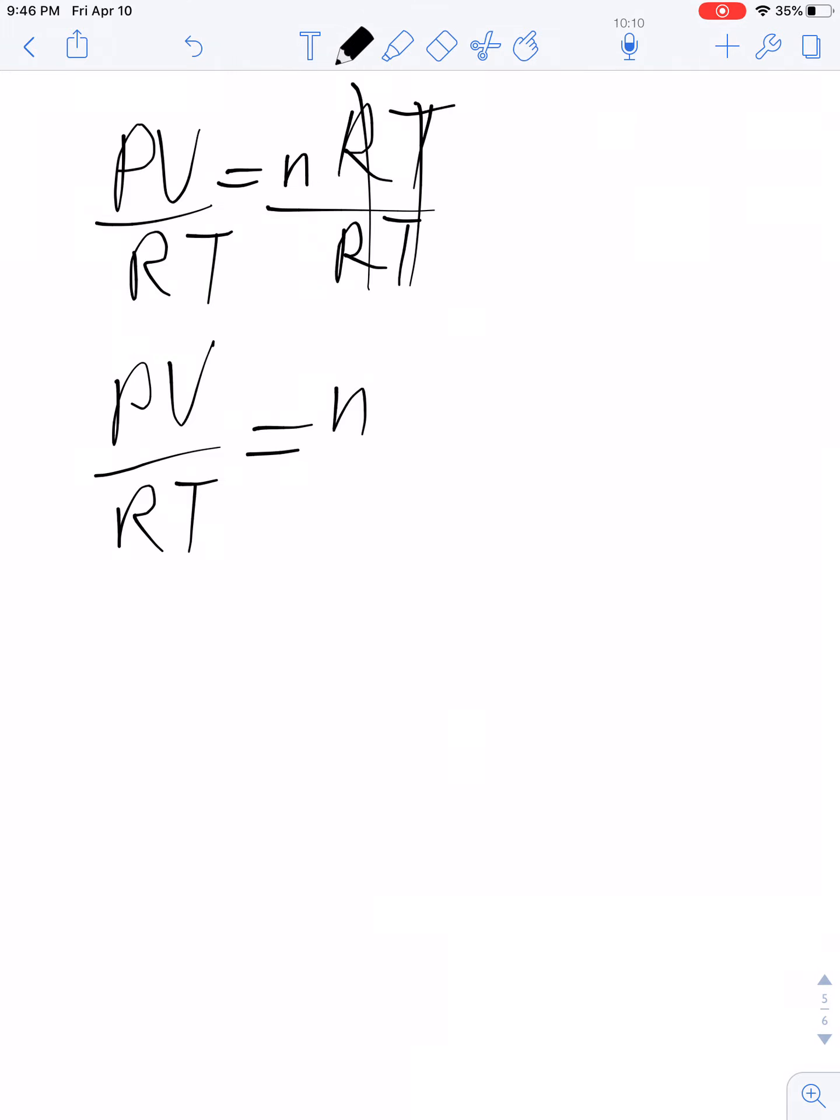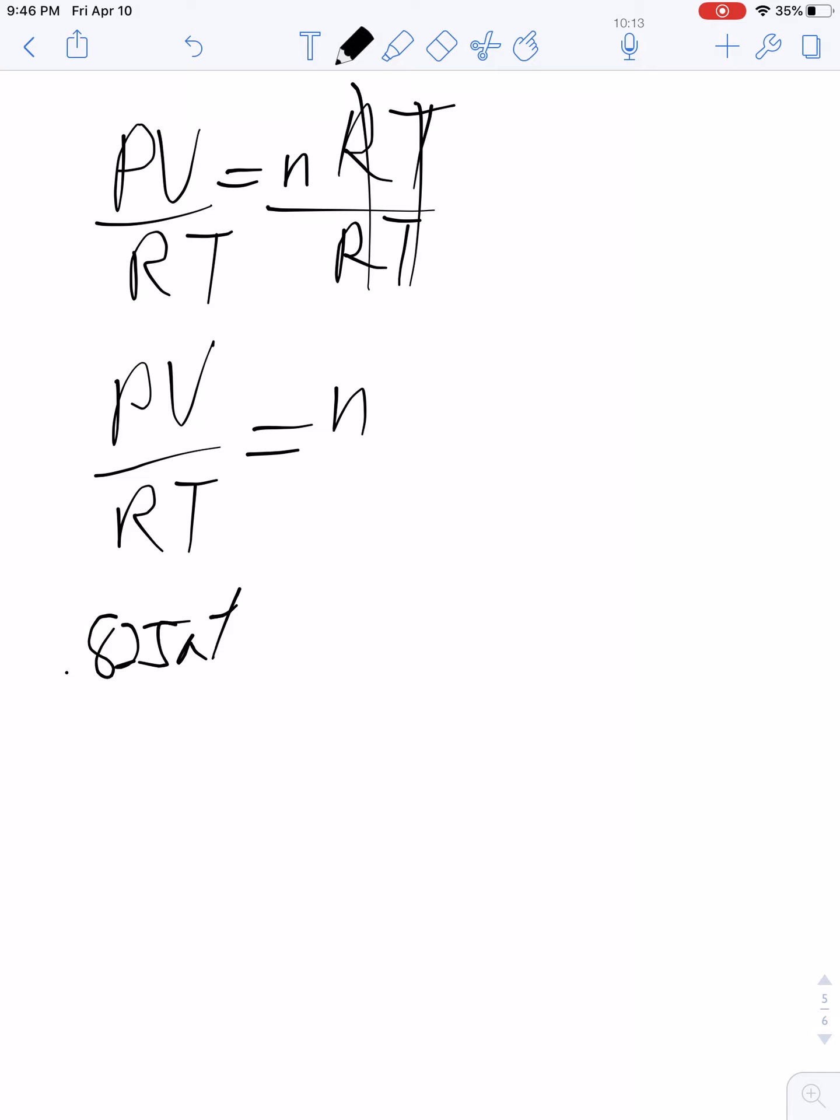I want to find moles, so I'm going to divide both sides by RT. Now I can plug in the numbers: my pressure was 0.825 atmospheres, my volume was 2 liters, my R value is 0.0821 liters atm over moles Kelvin, and then my temperature was 273 Kelvin. Plug into the calculator.